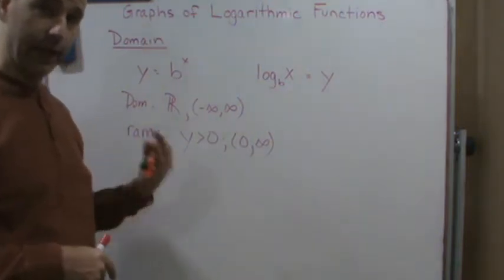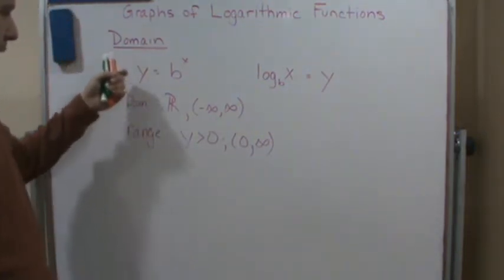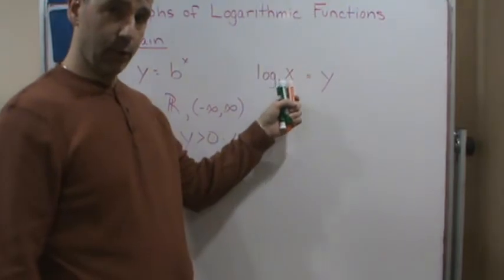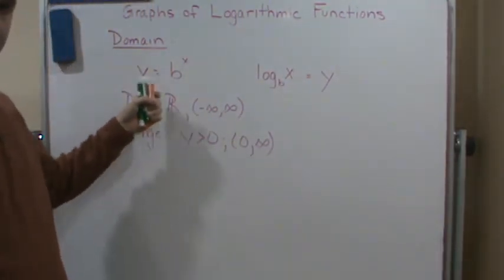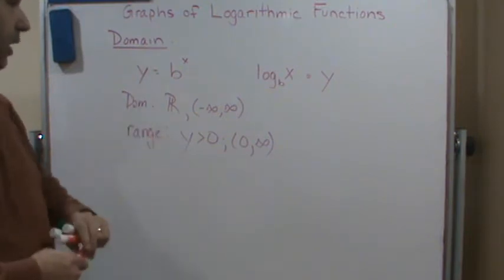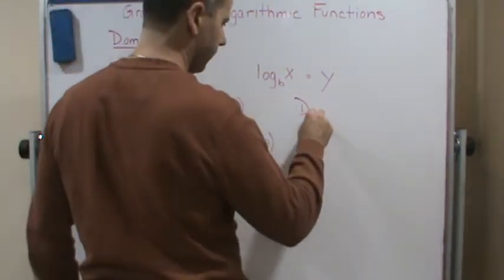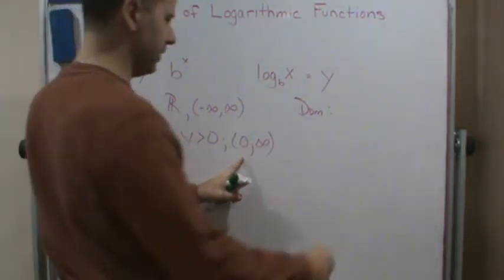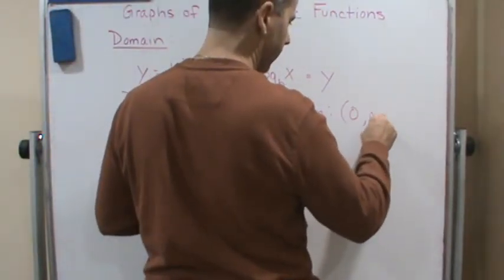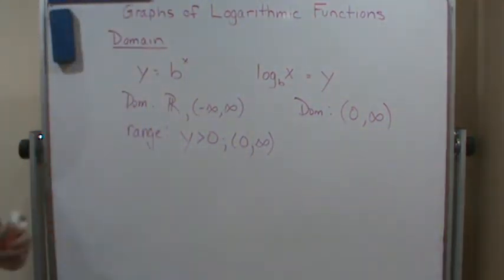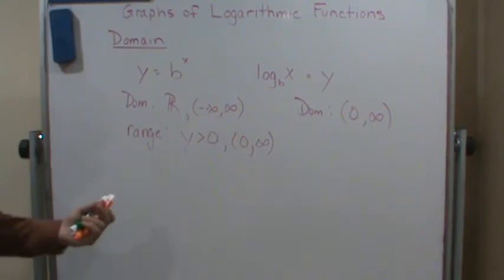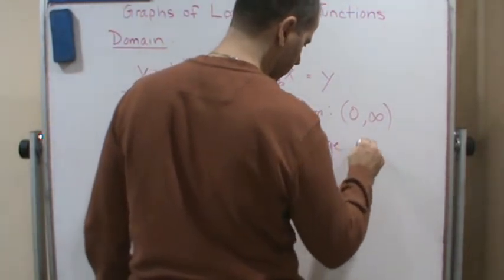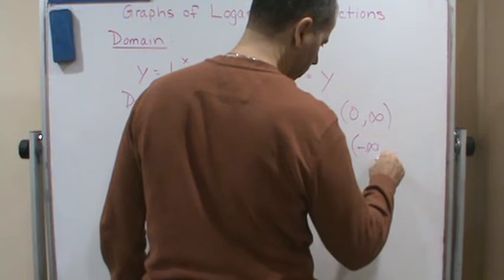With logs, remember logarithmic functions are inverse functions of exponential functions. So the domain and range of a logarithmic function is going to be the domain and range of the exponential function switched. The domain of a logarithmic function is going to be all positive real numbers — zero to infinity — and the range can be anything from negative infinity to positive infinity.